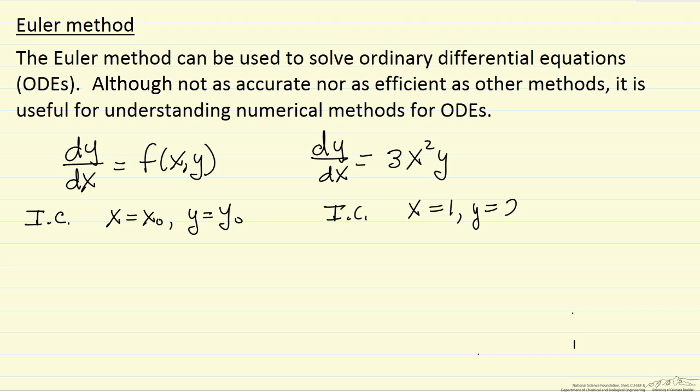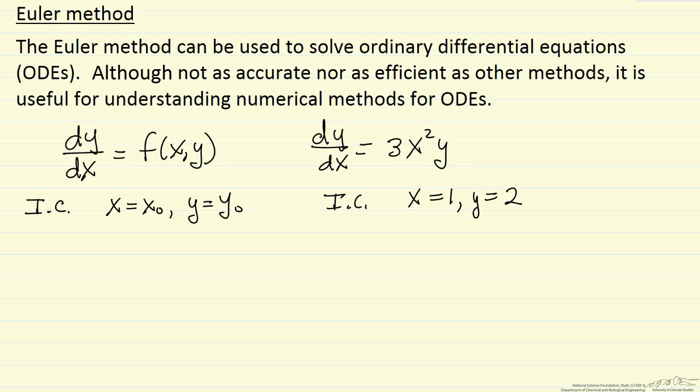So the way we're going to solve the equation is to use a recurrence formula, and the one for the Euler method says the value of y at some point we'll call n plus 1 is the value y evaluated at n plus some difference between the x values, x evaluated at n plus 1 minus x evaluated at n,